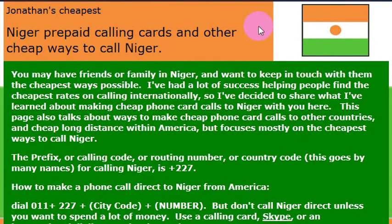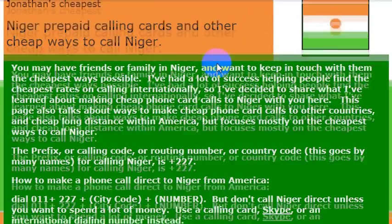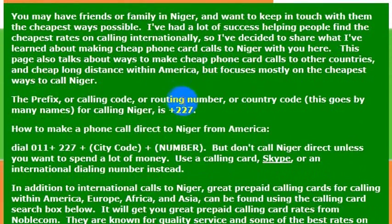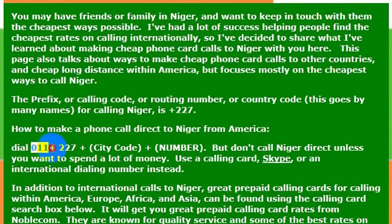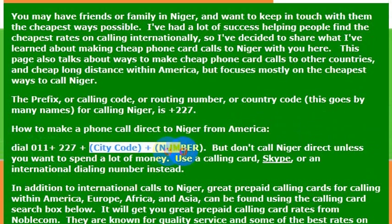If you want to call there from the United States, it's very simple. You just need to know the international dialing code for the country, which is 227. So if you were calling from a landline to Niger, you would dial 011, which is the international dialing code, then 227, which gets you to the country of Niger, and then the phone number that you want to dial.